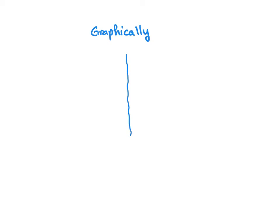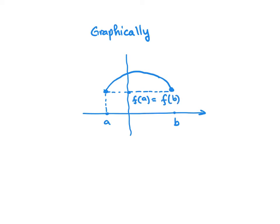Graphically, we can think of Rolle's theorem in the following way. We assume we have a function F defined on the interval [a, b], and our function is continuous and differentiable on this interval, and the value of the function at a is exactly the same as its value at b. Then the theorem tells us there is a point C somewhere in (a, b) such that F'(C) = 0 — meaning the tangent at that point is a horizontal line.